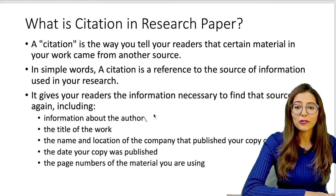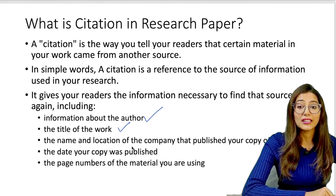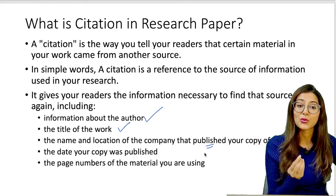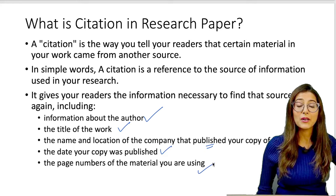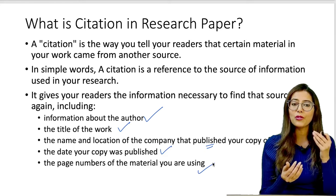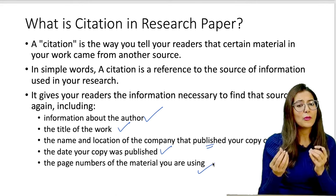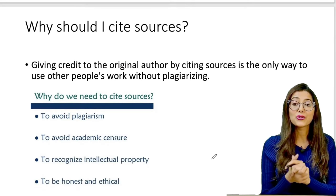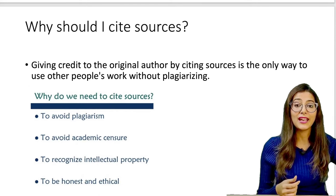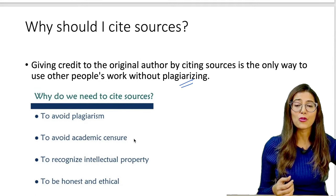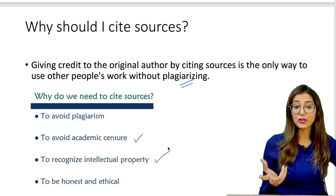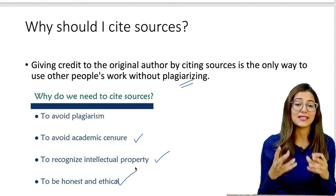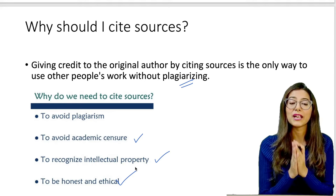In a citation, the important things you need are: information about the author, the title of the work, the name and location of the company that published it, the date of publication, page numbers, and volume of the publication. Why should you cite sources? You have to give credit to people's work; if not, you will be plagiarized. You need to recognize intellectual property and use it. And lastly, to be honest and ethical — if you are ethical, you must give credit and reference.